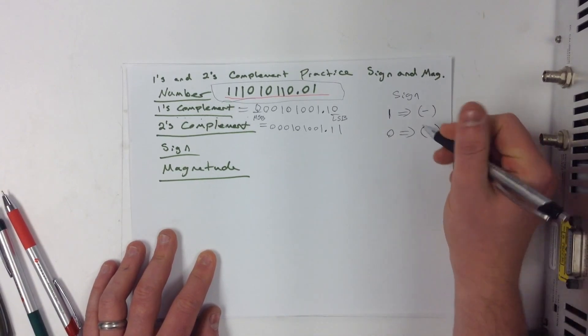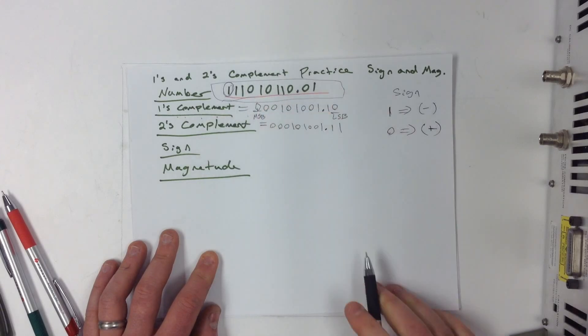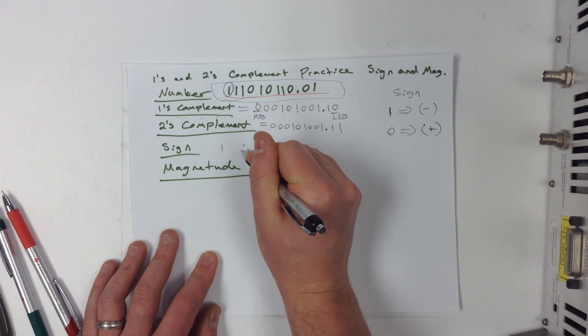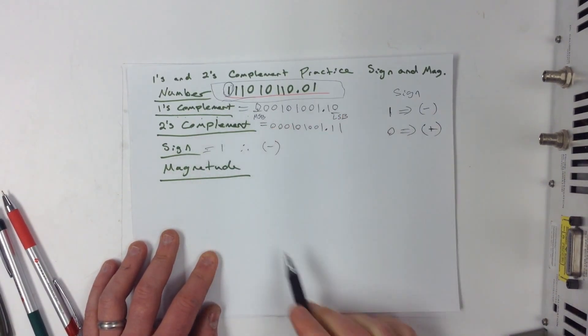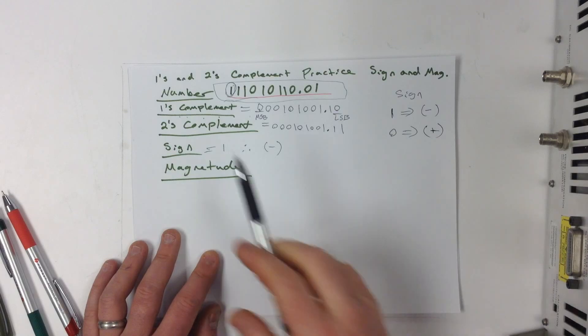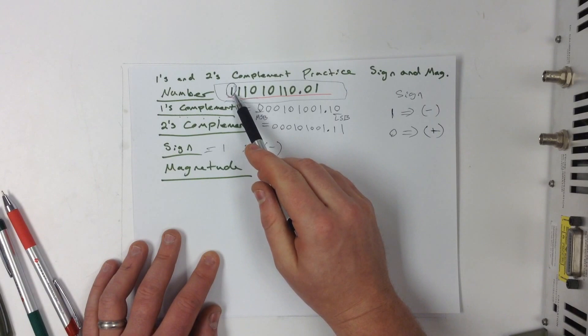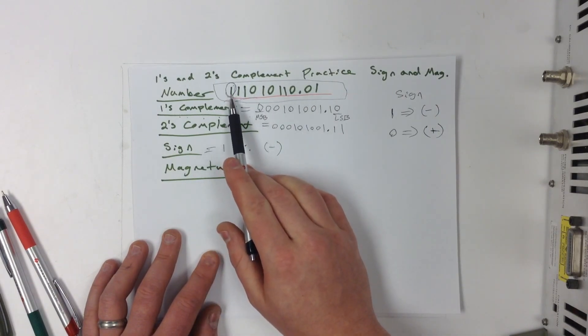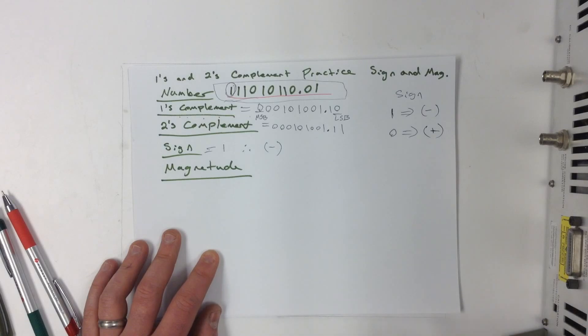Now, in sign and magnitude form, we always take this most significant bit as the sign bit. So the sign here is a 1, therefore, we can say it's a negative sign. And it's just as simple as that. You always get it from the number. You never get it from the 1's and 2's complement because everything's flipped and turned around. But if we do it from the number and we see that the first bit of that number is a 1, then we can say that it is a negative number. If the first bit of this one was a 0, then we can say that it's a positive number. But in this case, we definitely have a negative number here.